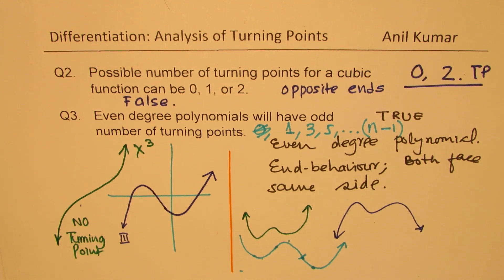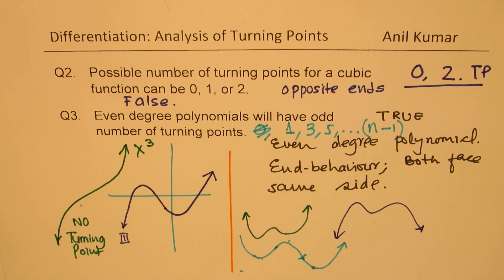So you get an idea for these three questions. It's very important to understand that odd degree polynomials have an even number of turning points, and the maximum number of turning points is always n minus one. Even degree functions will have at least one turning point, while odd degree functions can have zero turning points. I hope that helps — feel free to write your comments, share your views, and if you like and subscribe to my videos, that'd be great. Thanks for your time, and all the best.